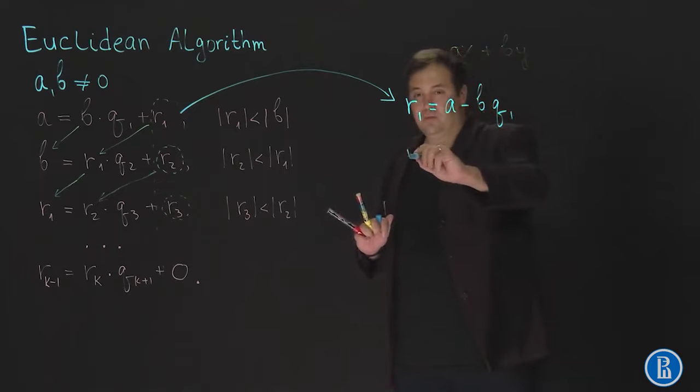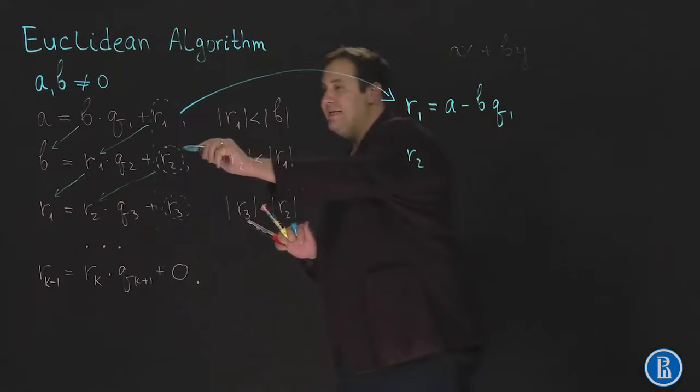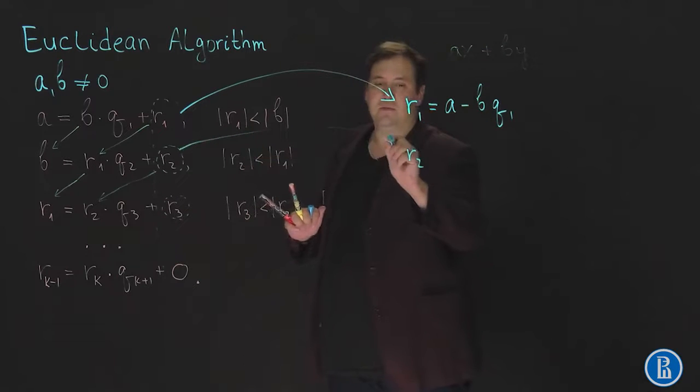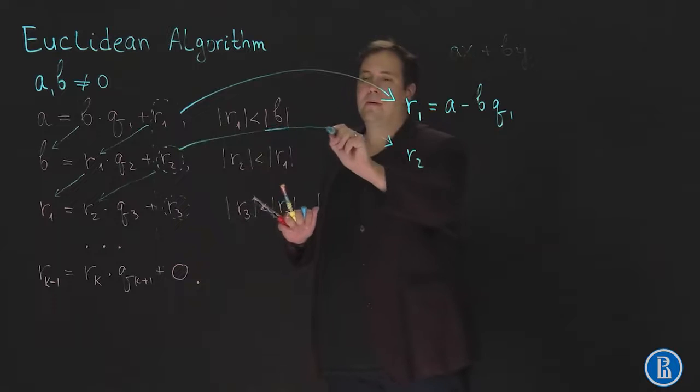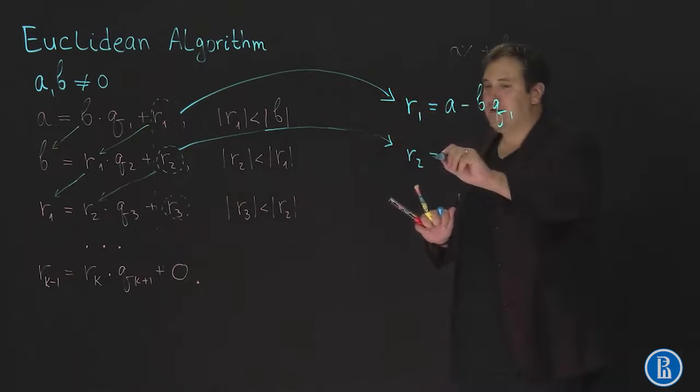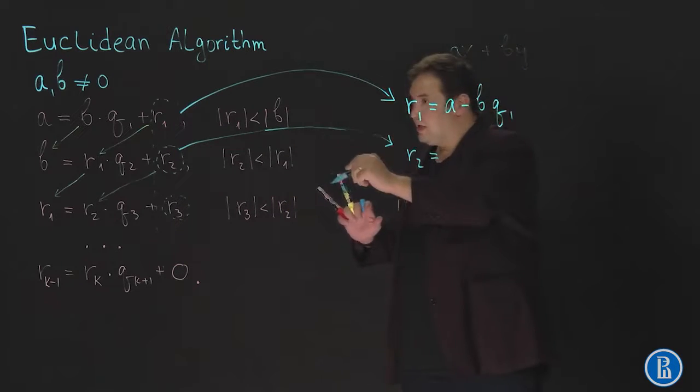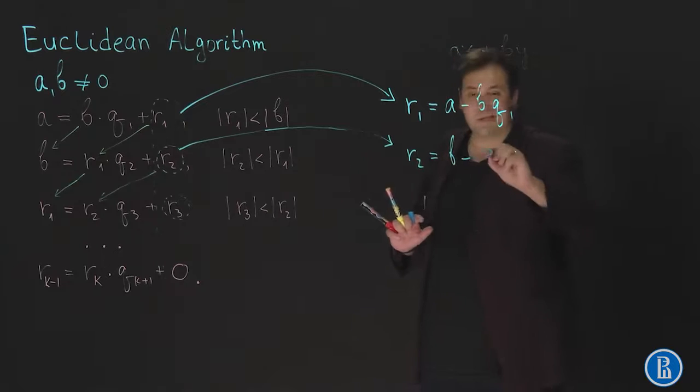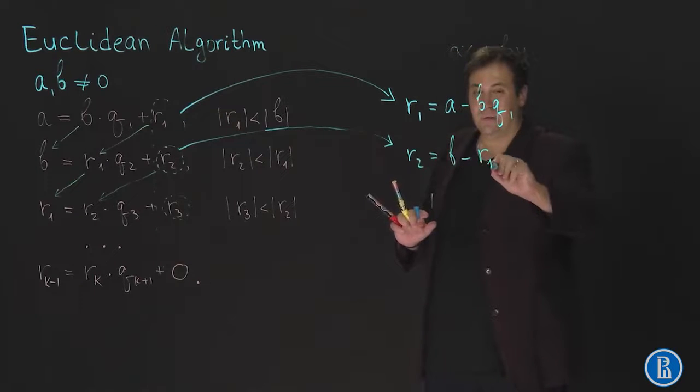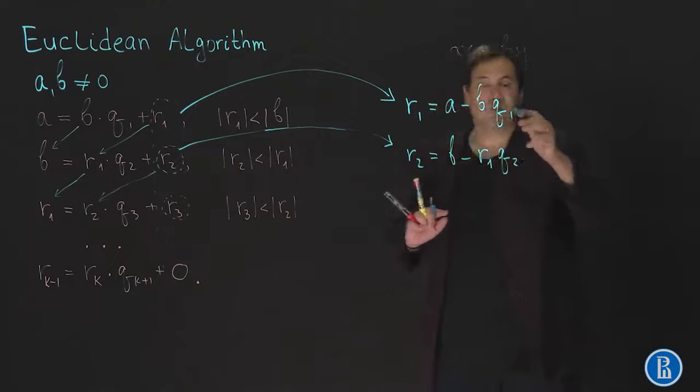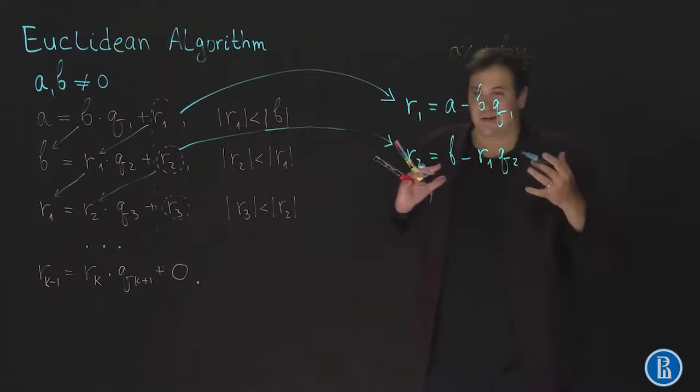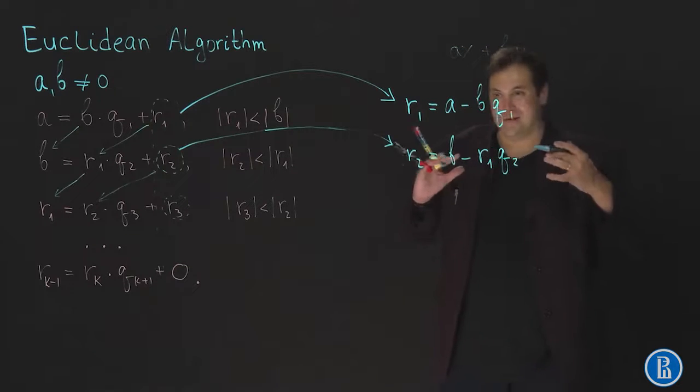As for R2, we take the second line here and write that R2 is equal to B minus R1 Q2. But R1 is also already represented linearly using A and B.